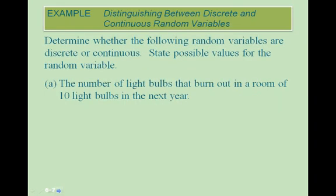Let's look at an example of distinguishing between discrete and continuous random variables. For Part A: the number of light bulbs that burn out in a room of 10 light bulbs in the next year. This would be discrete — these are countable whole numbers — and the values would be 0, 1, 2, all the way up to 10, with no decimal values in between.